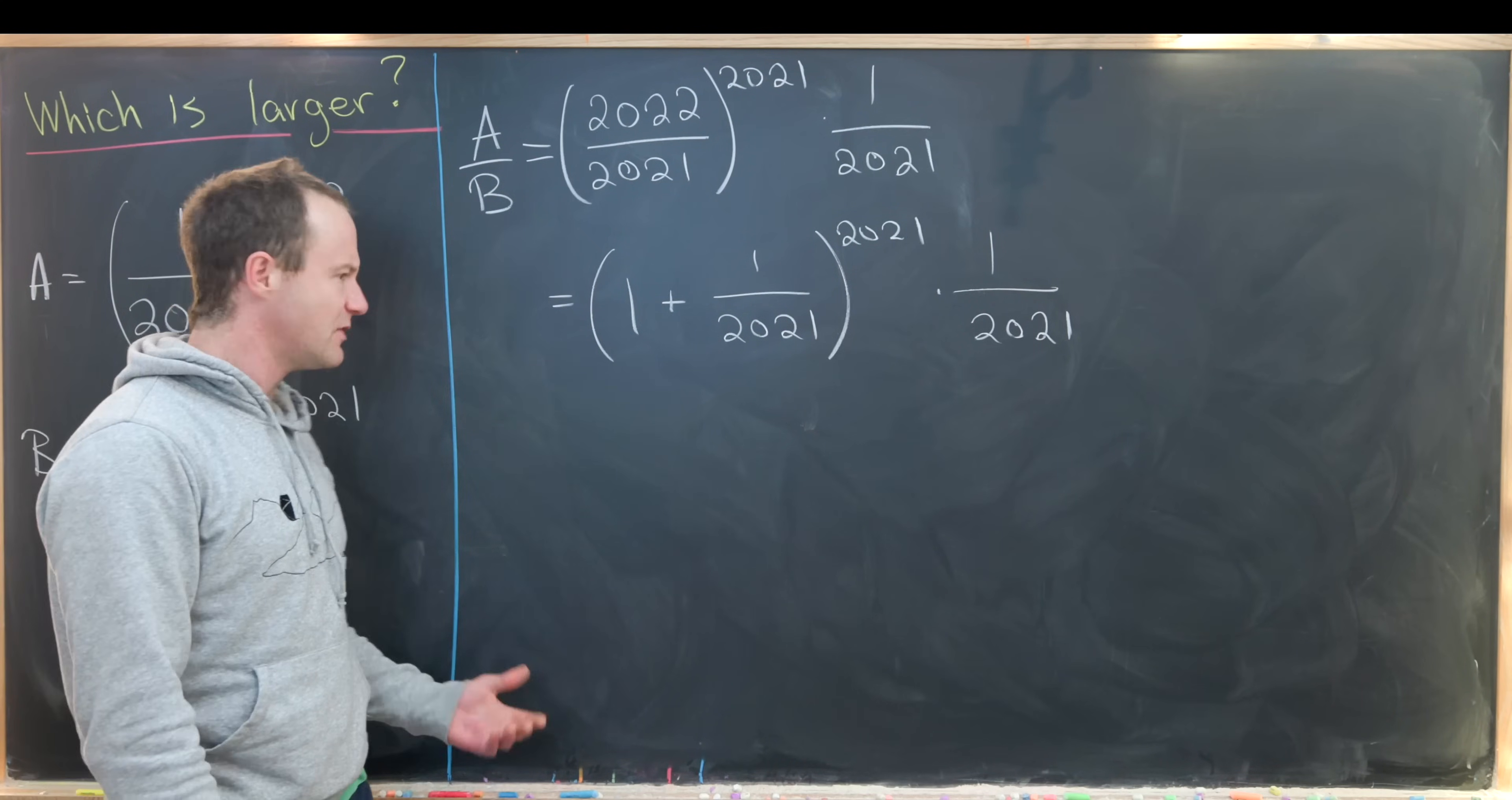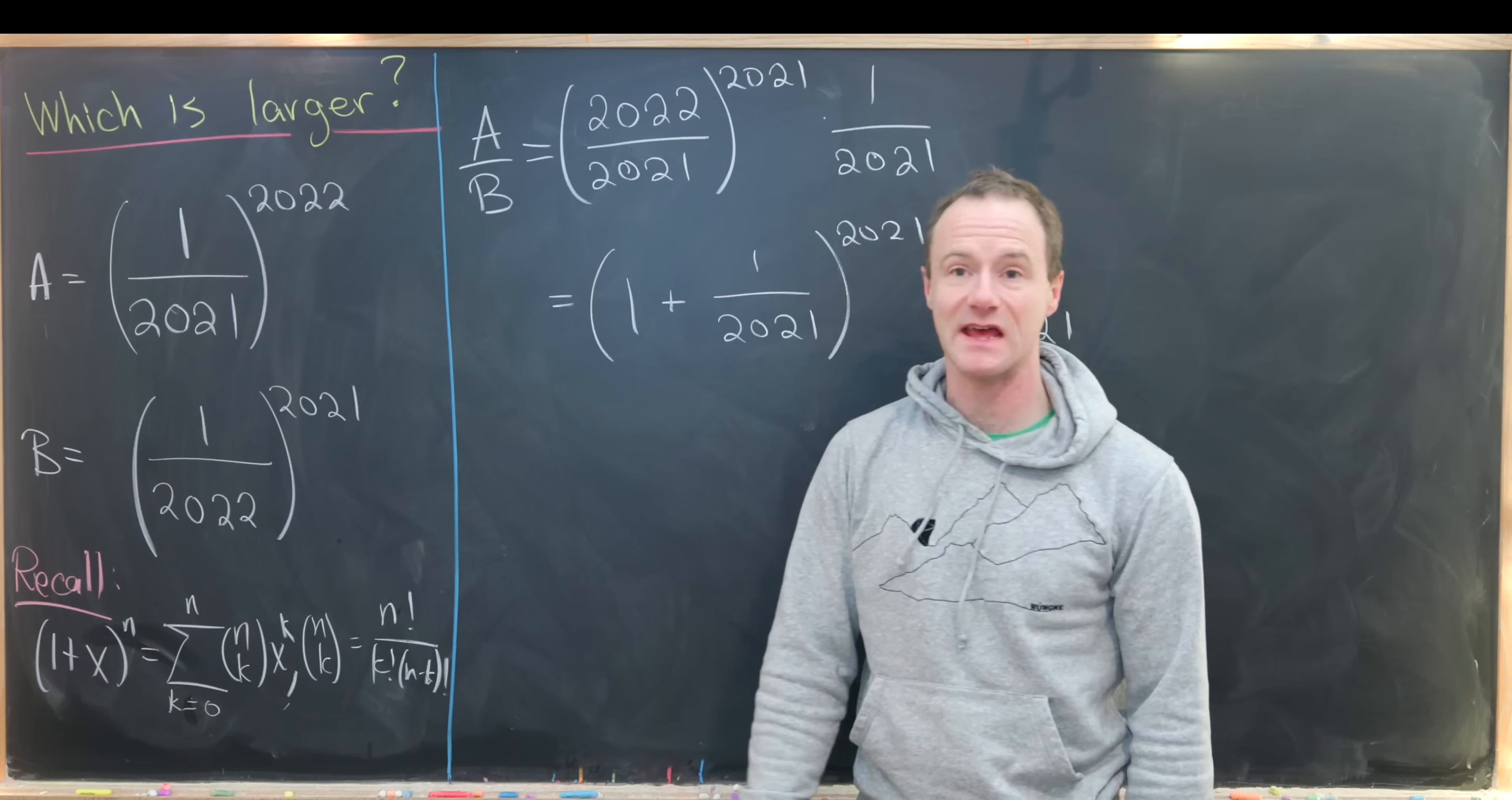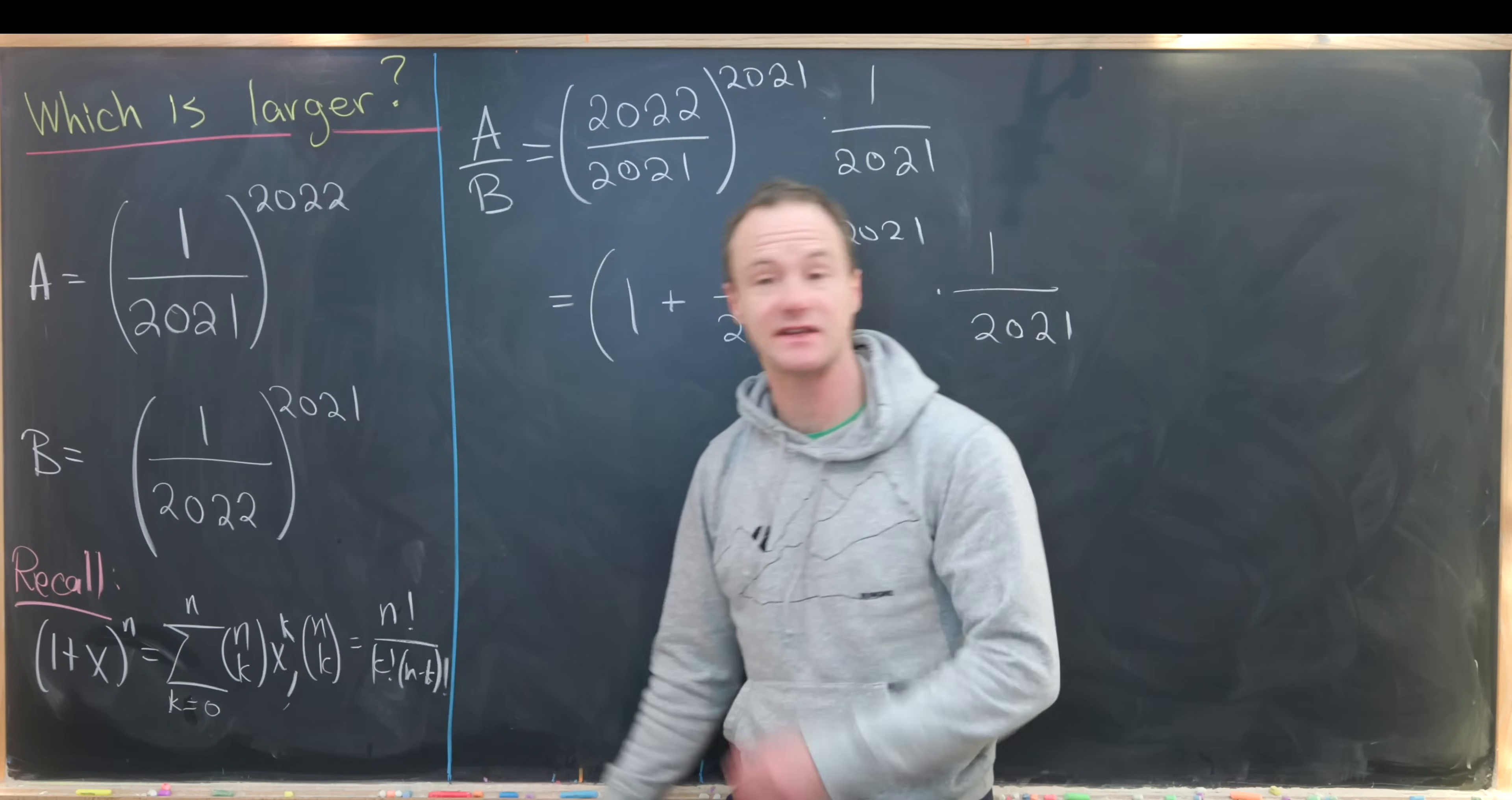Let's recall the binomial expansion formula. The expansion of 1 plus x to the n is the sum as k goes from 0 to n of n choose k times x to the k.